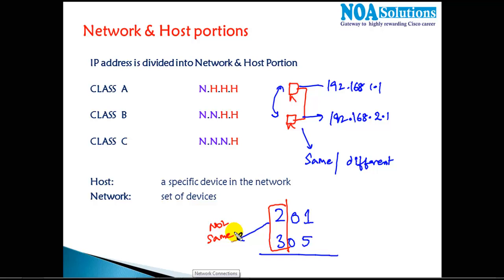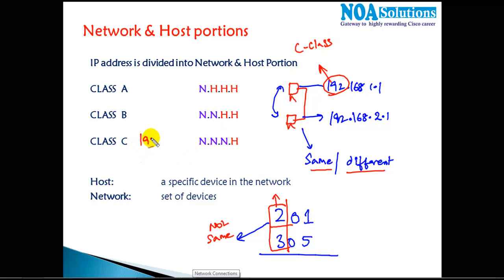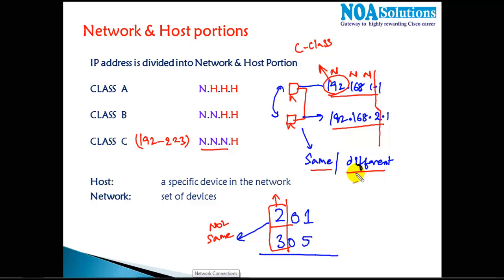Similarly in IP addressing, whether two devices are on the same network or different networks is identified based on the network portion. This address belongs to Class C (range 192–223). In Class C there are three network portions, and for the same network, those portions must match. Here we have 192.168.1 and 192.168.2 — the network portions are different, so these devices are on different networks and cannot communicate directly.